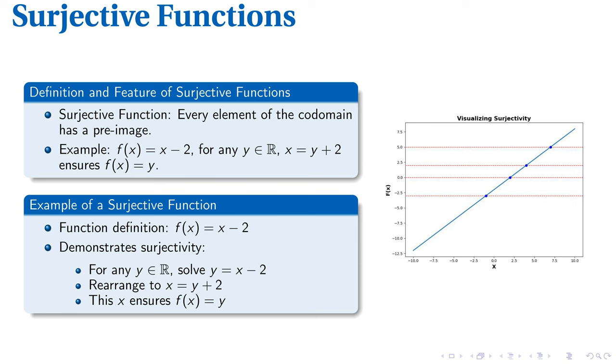Surjective functions ensure that each element in the codomain has a pre-image, representing another aspect of function behavior. This property implies that all output values have at least one corresponding input. Let's delve into an example. The function f of x equals x minus 2 exhibits surjectivity.